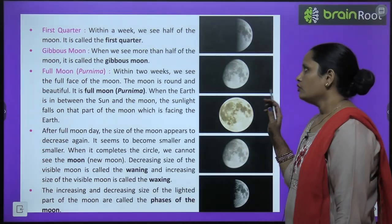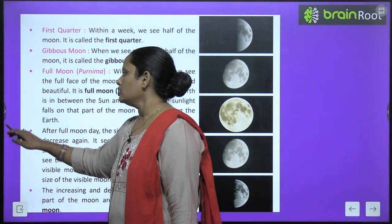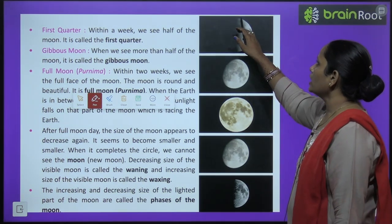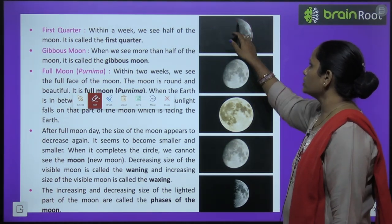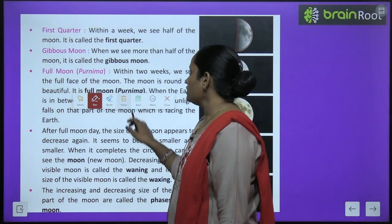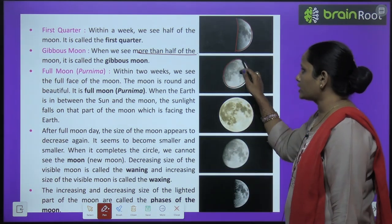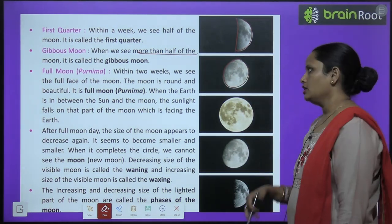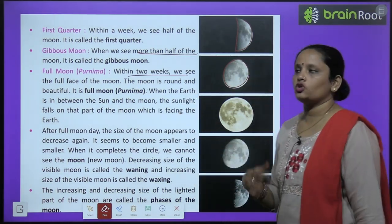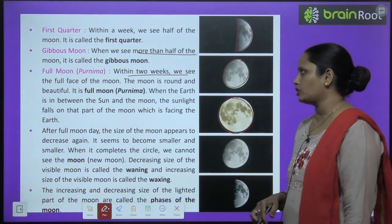Within a week we see half of the moon, and it is called the first quarter. When we see more than half of the moon it is called the gibbous moon. Then comes the full moon — purnima — within two weeks, when we see the full face of the moon.